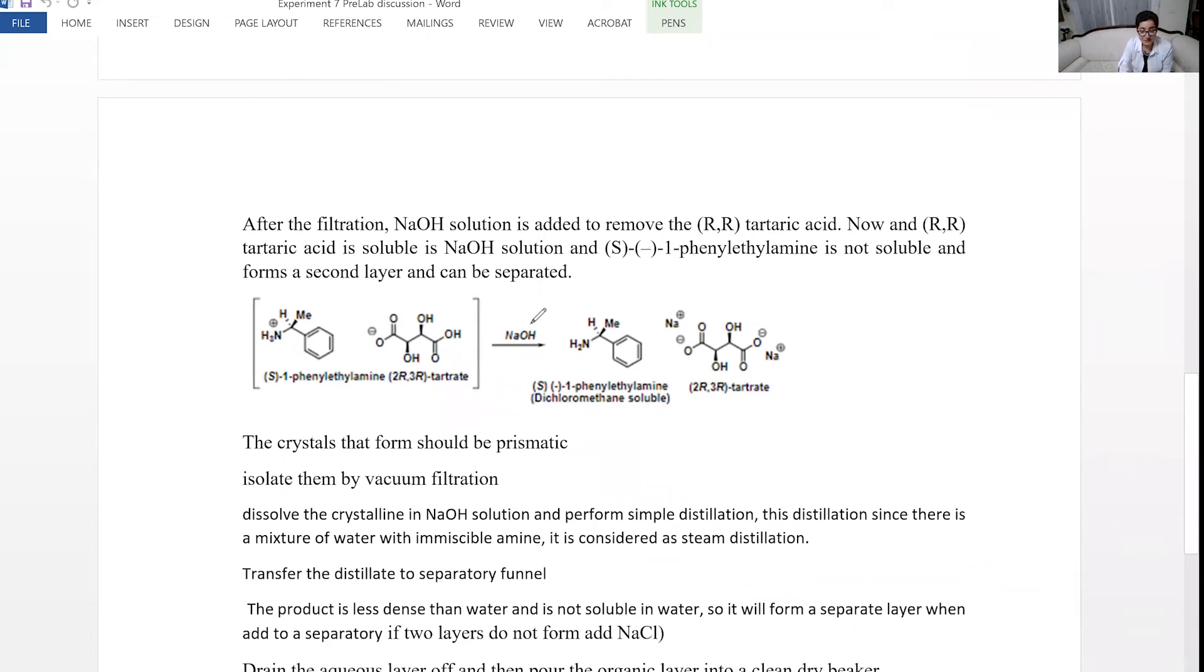After, because they have different solubility, one is solid, the other one is solution, you can separate by filtration. You can use vacuum filtration or gravity filtration to separate. And when you have these crystals, you don't need the tartaric acid anymore. You want to remove the tartaric acid, so you mix it with sodium hydroxide to remove the tartaric acid, and you recover this S-enantiomer of phenylethylamine.